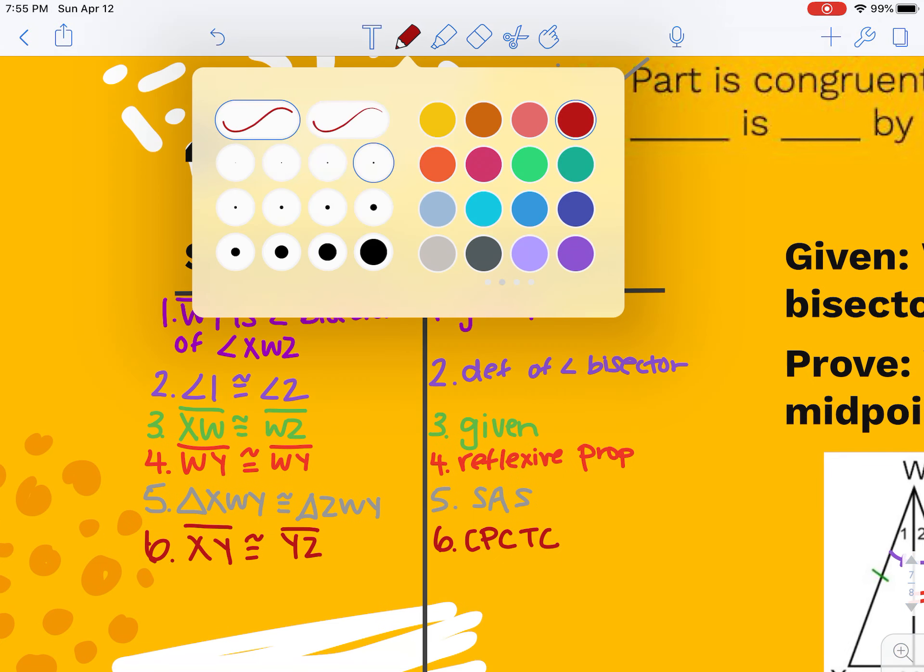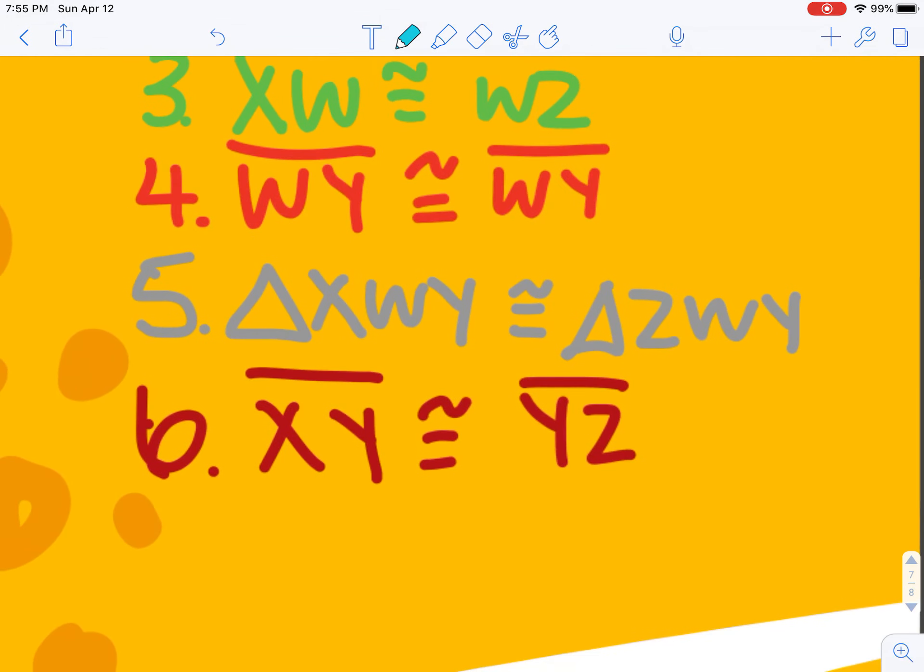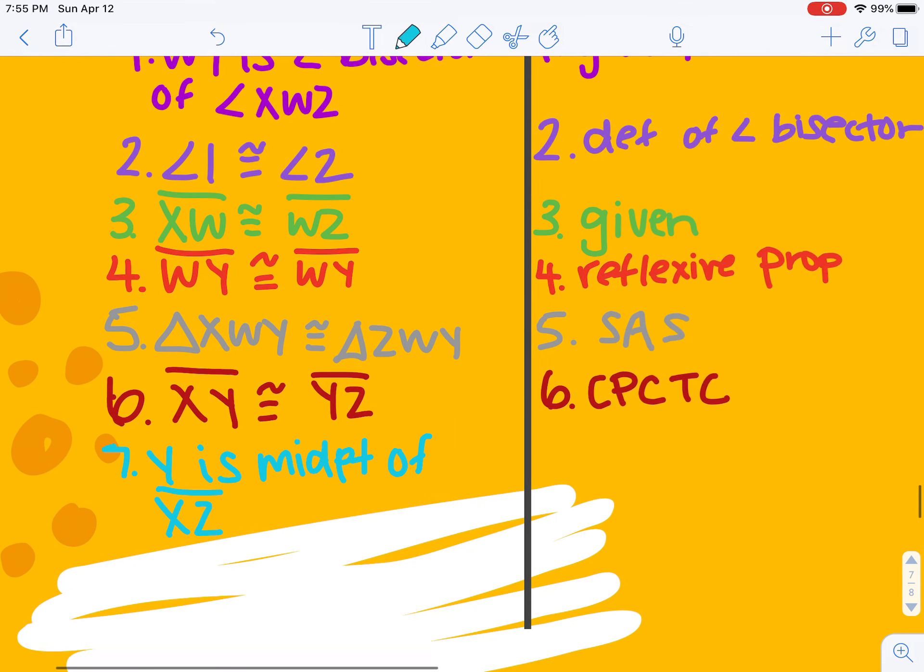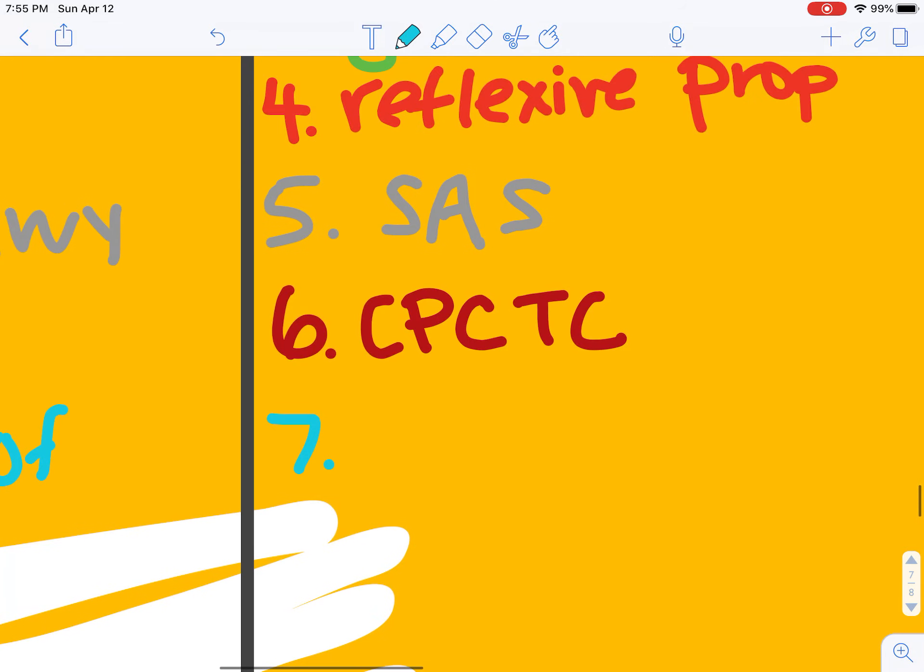And then because those are congruent now, I can jump in and say Y is midpoint of XZ. And I could say because XY is congruent to YZ. Or if I want to sound extra fancy, I will say definition of midpoint.